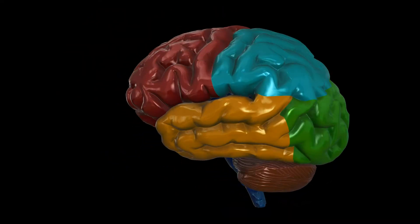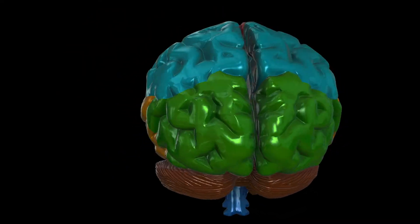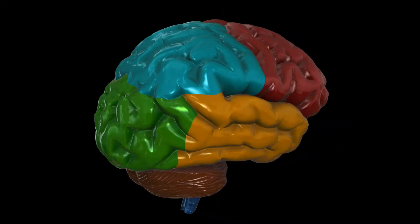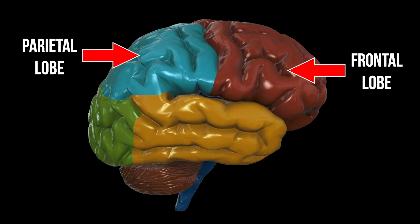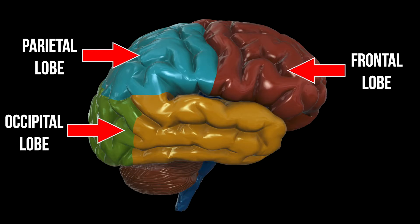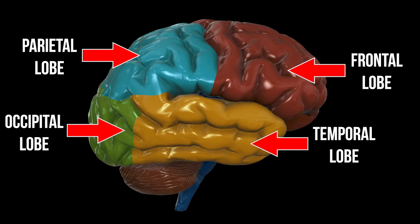The red section is the frontal lobe, the light blue is the parietal lobe, the green is the occipital lobe, and the yellow sections are the temporal lobes. Each of these sections are known to control certain functions.